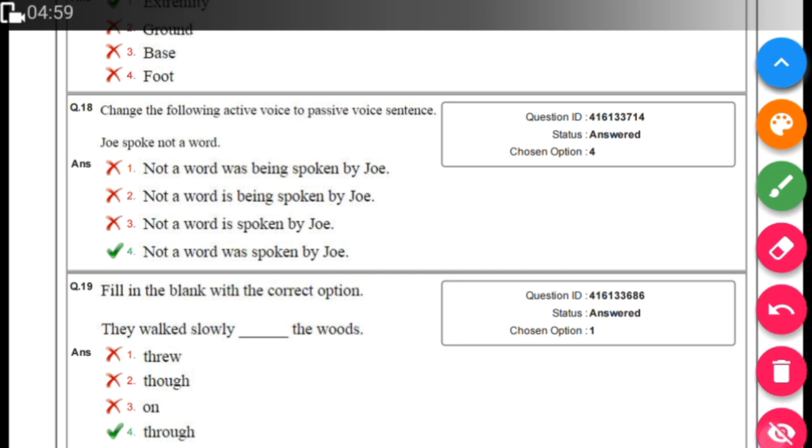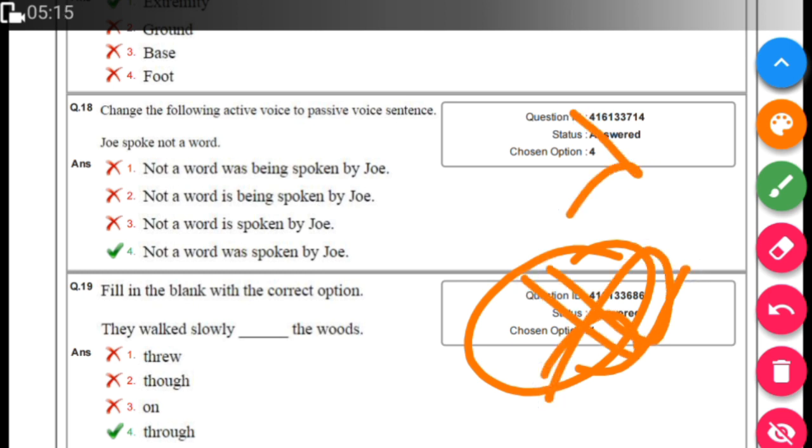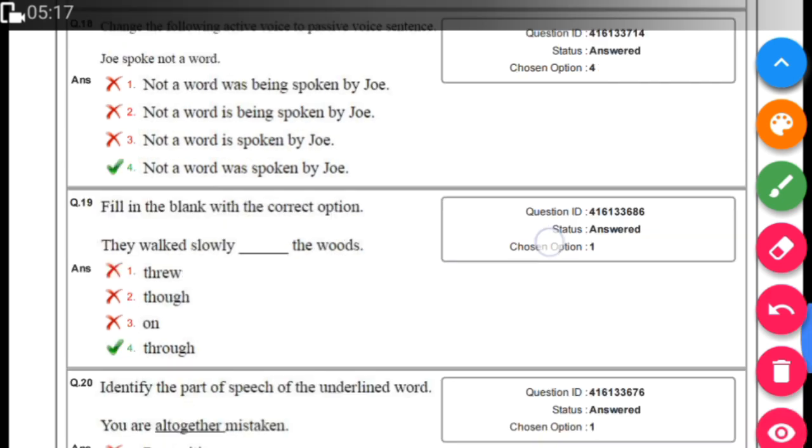Some active passive questions: 'Joe spoke a word,' so the answer is 'A word was spoken by Joe.' In the right section, the answer is marked by the candidate, so do not worry about this option.